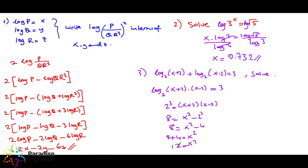Taking the square root of x squared — since this is a quadratic equation, there must be two answers: x equals plus or minus root 12. Root 12 is approximately 3.46, so x equals plus or minus 3.46. We got two answers.